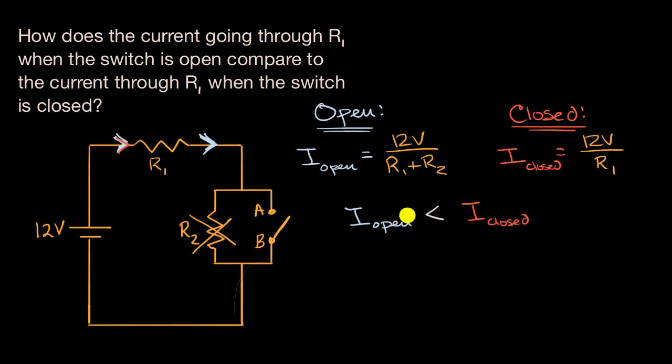Once again, why is that? Well, just look at the denominators here. When the switch is open, you're dividing by a larger number than when the switch is closed. Or another way of thinking about it, when the switch is open, the R2 resistance is factored in. When the switch is closed, the R2 resistance essentially becomes a non-factor and you have less resistance, which would mean you would have higher current.